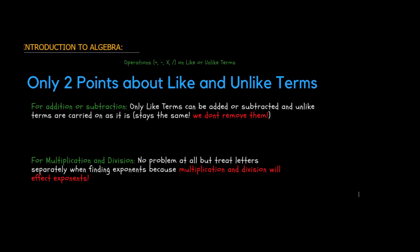So here are the two important points we learned from these examples. First, for addition or subtraction, only like terms can be added or subtracted. Unlike terms are carried on as they are — they stay the same and we do not remove them. When we say they cannot be added it means they stay the same: for example, 5x plus 5 cannot be simplified further.